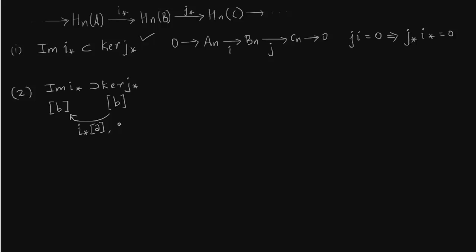So i* also lands in HnB. So we have to map these two b's but it has to get mapped via an element a in HnA. So if element a in HnA means that a belongs to kernel of δ because HnA is nothing but kernel of delta over image of delta. So a belongs to kernel of delta. That is δa = 0.